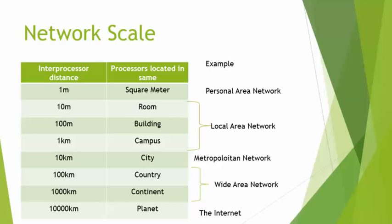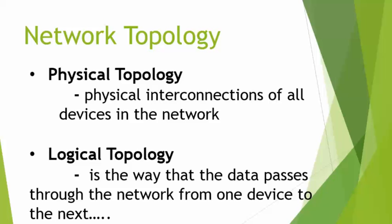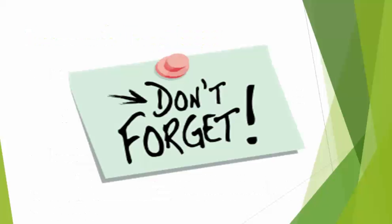In addition to scale, you can also classify networks by topology. Network topology describes how different network components are interconnected — both how they connect physically and how they connect logically. Physical topology refers to the actual physical interconnection of all devices with wires and cables, while logical topology is the way that data passes through the network from one device to the next.